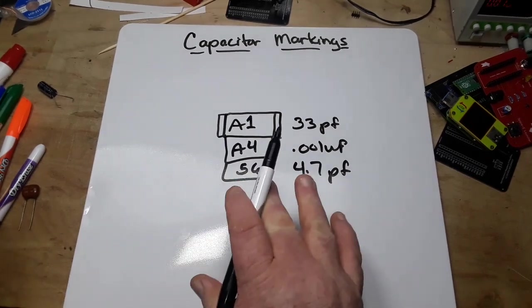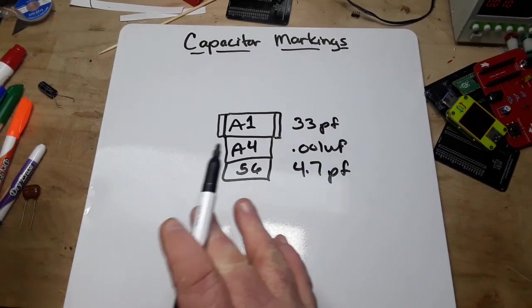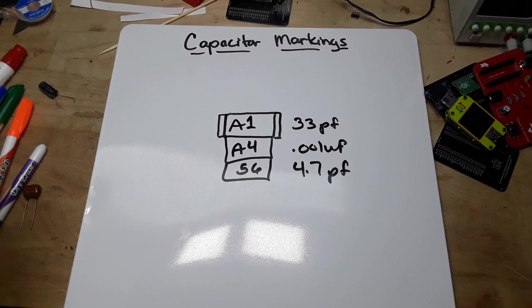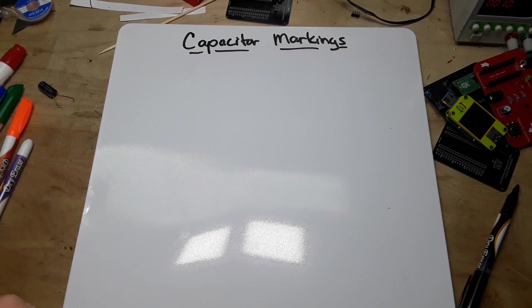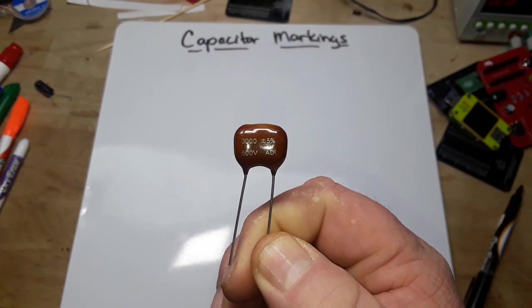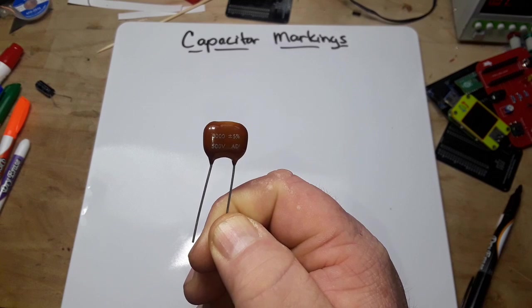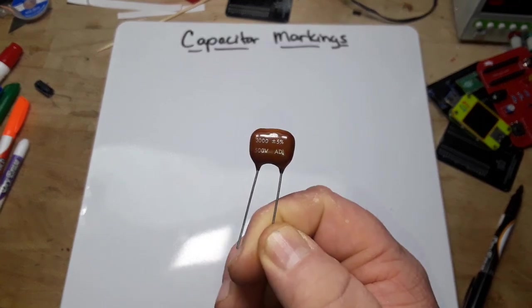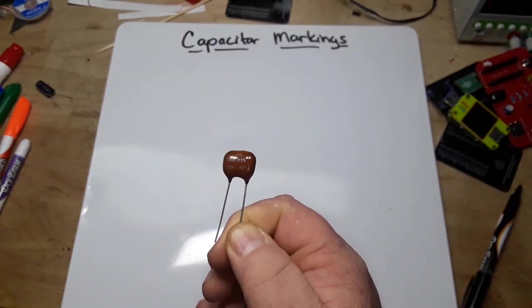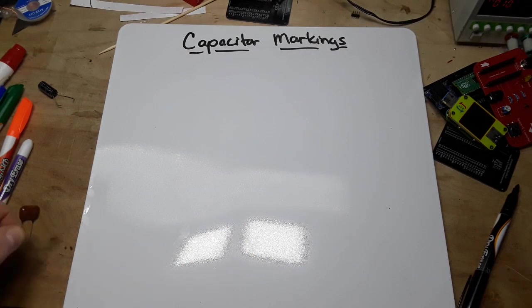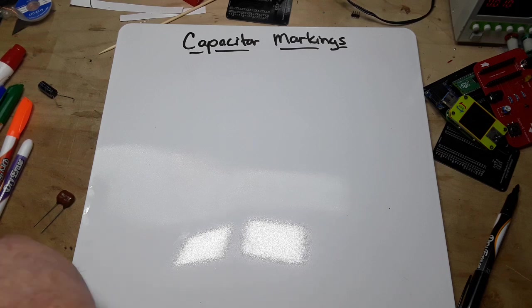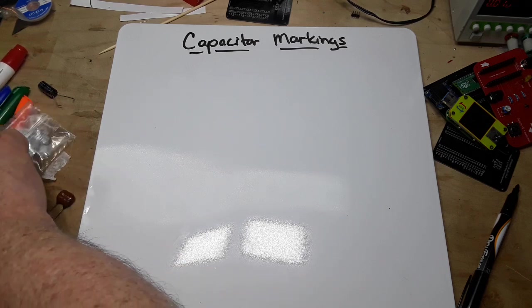So when it comes to surface mount capacitors, just look them up. The two types of capacitors I really want to talk about today are basically your polyester or mylar capacitors and the large ceramic disc type capacitors, because these have codes on them.